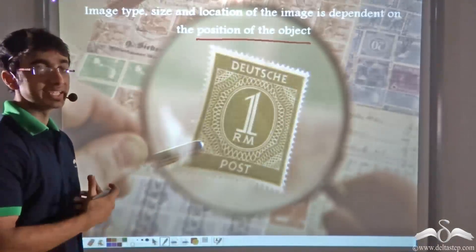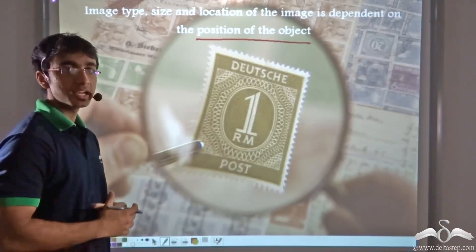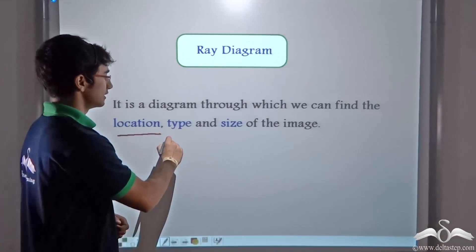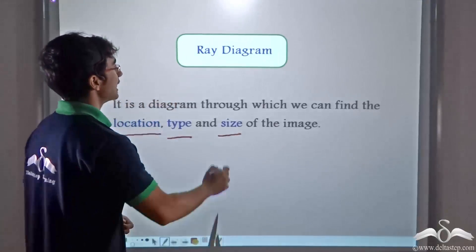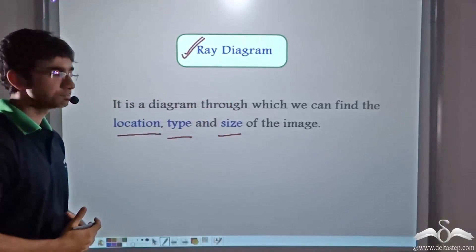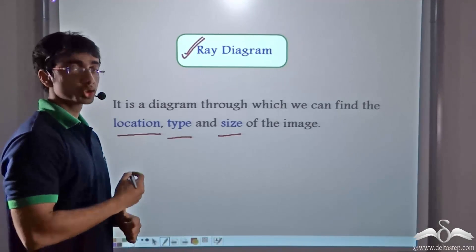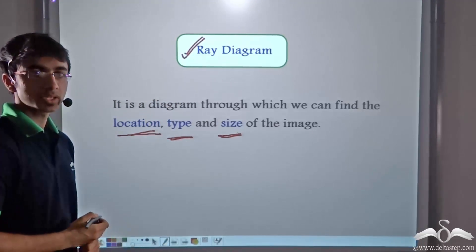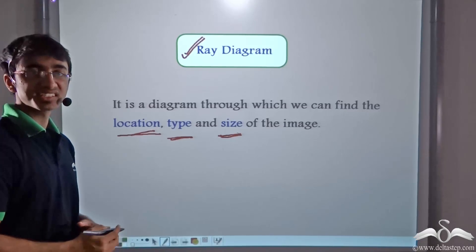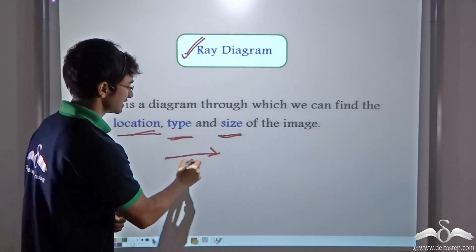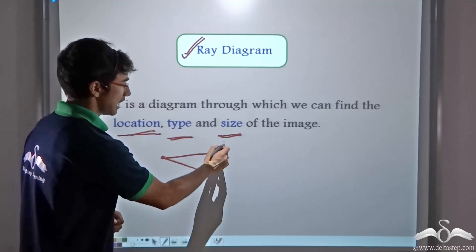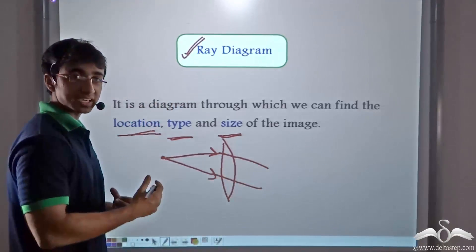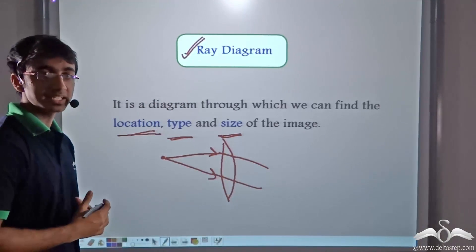Now let us find out how we can determine the image type, size, and location. We can determine these with the help of a ray diagram. A ray diagram is a diagram through which we can define the location, type, and size of the image. A ray diagram is obtained by tracing incident rays from an object, and after they fall on the lens, we trace the refracted rays. The point where the refracted rays meet is the point where we obtain the image of the object.